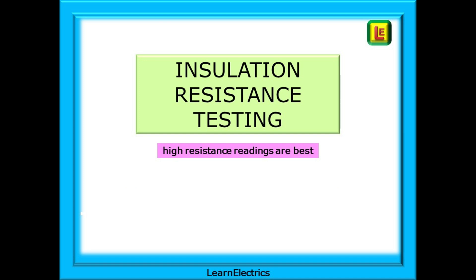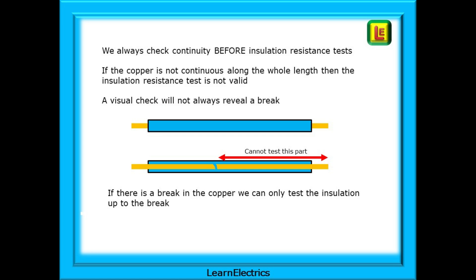Looking at insulation resistance testing now, keep in mind that high resistances are best for these tests - millions of ohms is what we want. We should always check continuity before the insulation resistance tests. If the copper is not continuous along the whole length then the insulation resistance test is not a valid test. Quite often a visual check will not reveal a break in the plastic insulation, and if there is a break in the copper we could only test the insulation up to the break, which is not good enough.